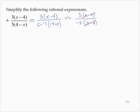Removing the common factor of x minus 4, we are left with 3 divided by negative 5, which is negative 3 fifths.